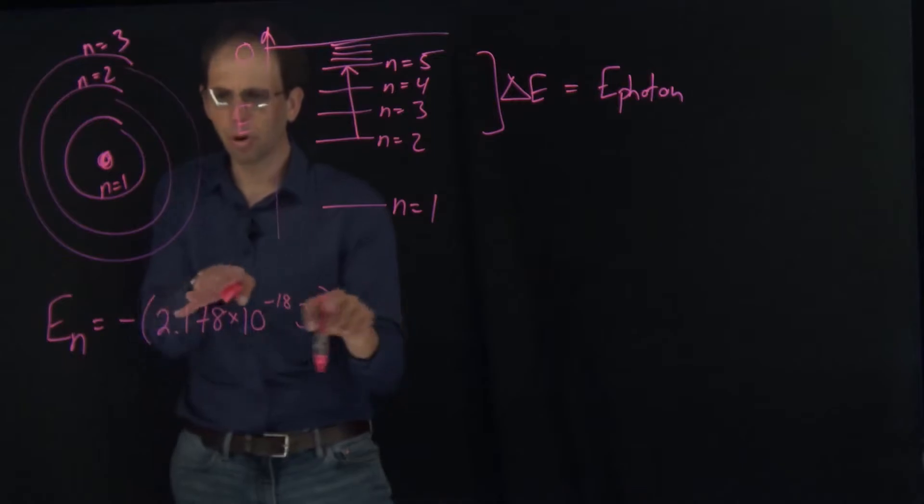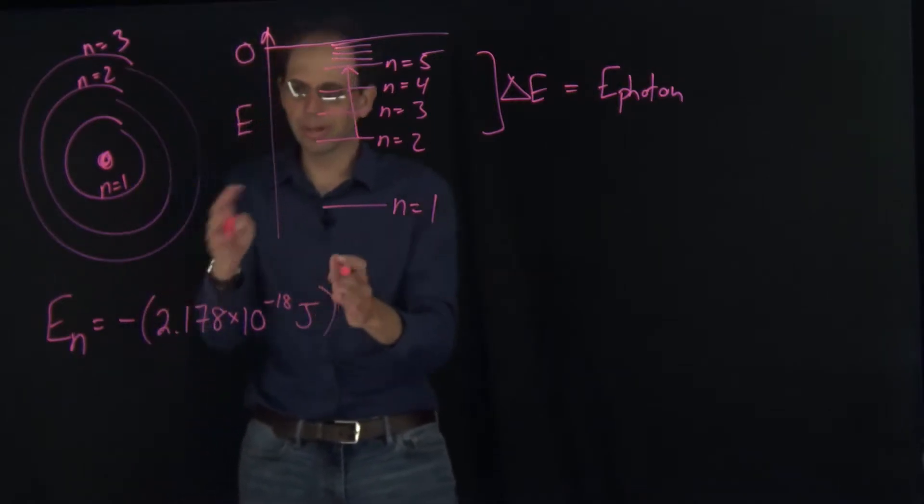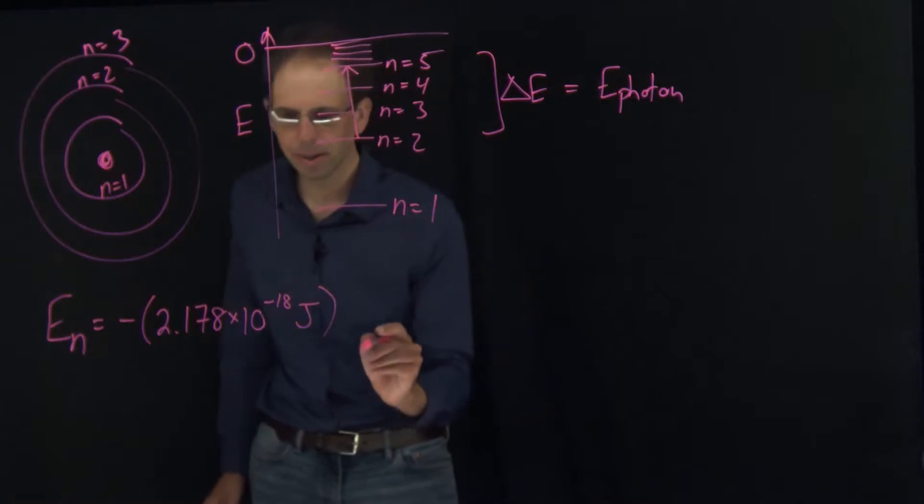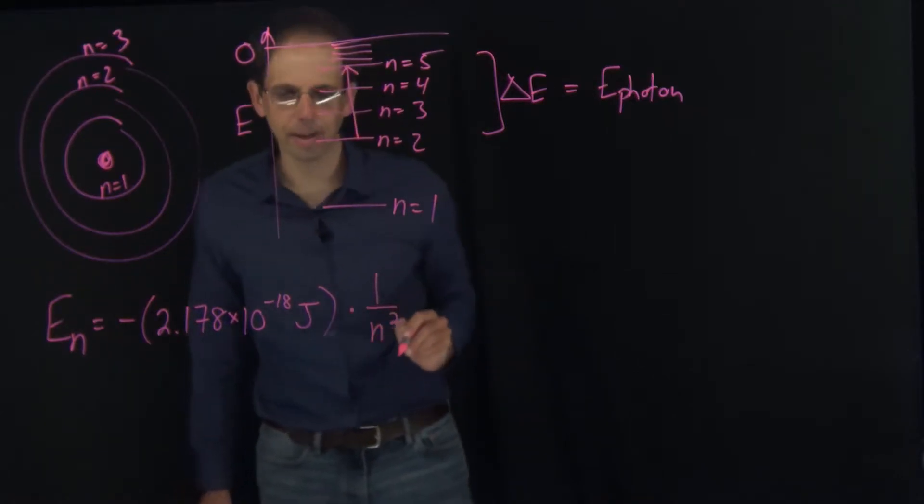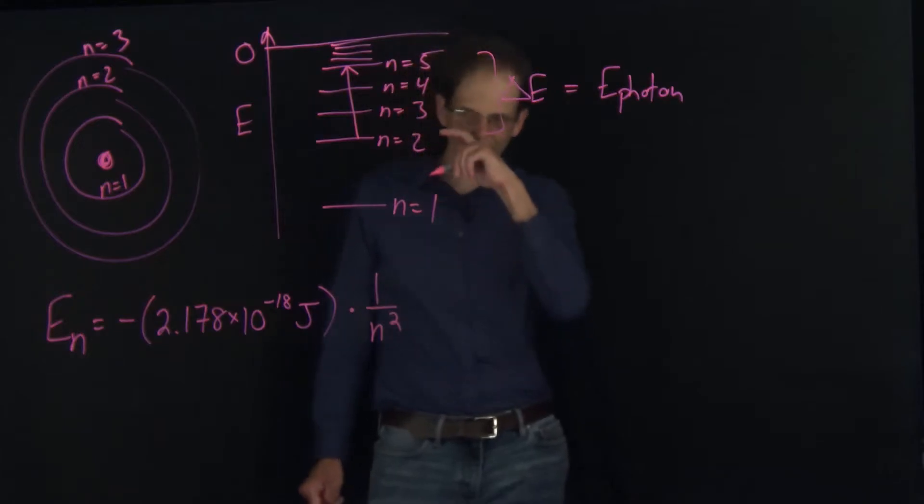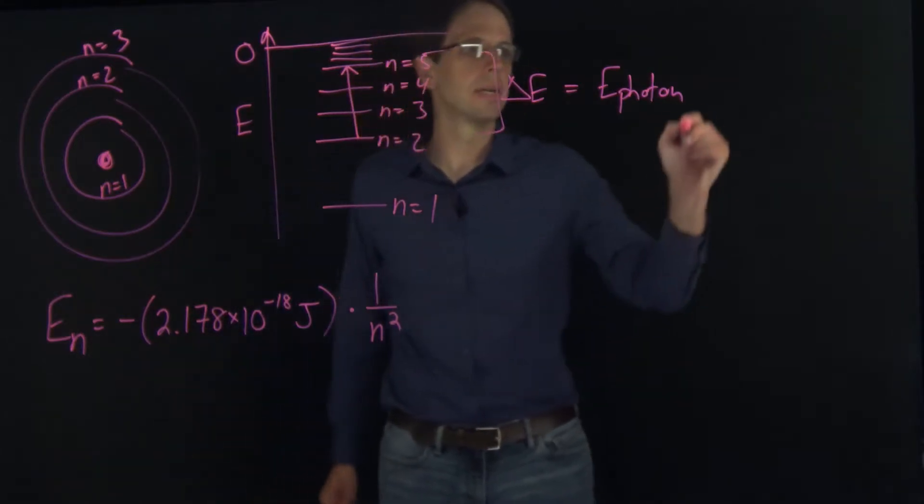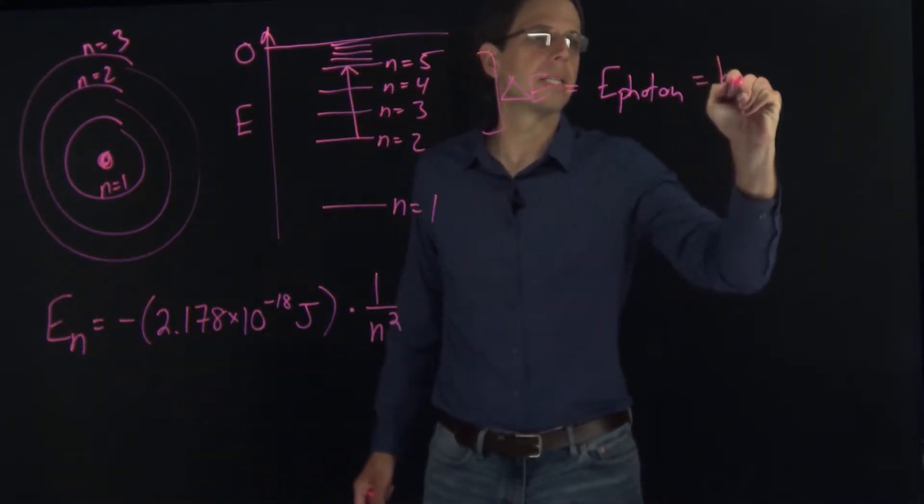In reality, this comes from a bunch of physical constants that we're not worrying about. This is just what you get when you multiply all those constants together times 1 over n squared. And the energy of the photon is just h nu.